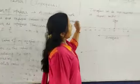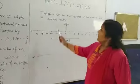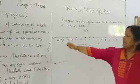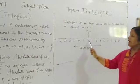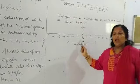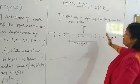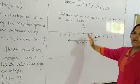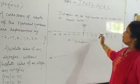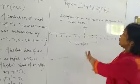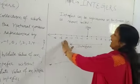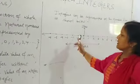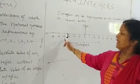Then comes integers. How do we represent integers on the number line? Here is the number line. We take 0 in the center. To the left side of 0, we take all the negative values of the natural numbers — minus 1, minus 2, minus 3, minus 4.